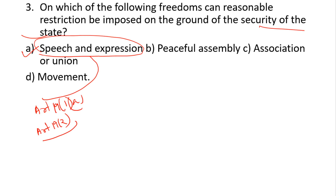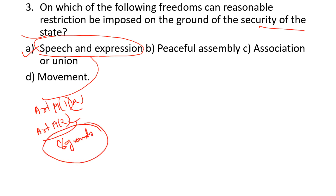Under Article 19(1)(a), reasonable restrictions can be imposed under Article 19(2). There are eight total grounds under which restriction on freedom of speech and expression can be imposed. We can make a chart for each freedom — freedom of speech and expression under Article 19(1)(a) with restrictions under Article 19(2).